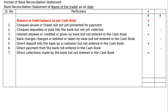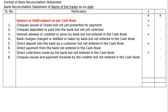Seventh item: direct collections made by the bank not entered in the cash book. The bank collects the amount and credits it in the passbook but it was not recorded in the cash book. Hence it will be added to the cash book balance. Eighth item: checks issued and payment received by the creditors but not entered in the cash book. The check was issued and the bank balance was reduced, so we have to reduce the cash book balance to find the correct passbook balance.